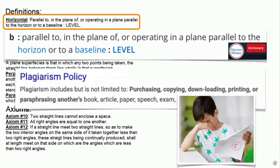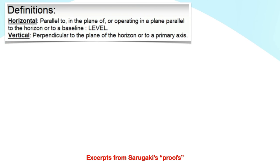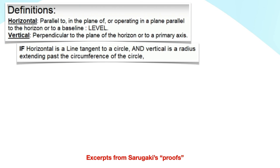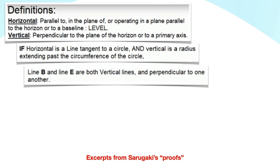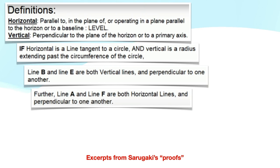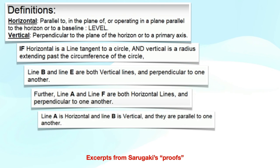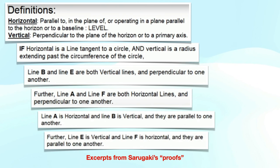He begins with a pair of definitions, literally copied and pasted from Merriam-Webster without attribution. And then when he gets to his actual proofs, he substitutes two completely different definitions. But it gets better. Saragaki proves that two vertical lines are perpendicular to each other, and that two horizontal lines are also perpendicular to each other. He then goes on to prove that a horizontal line is parallel to a vertical one, and that a vertical line is parallel to a horizontal line.